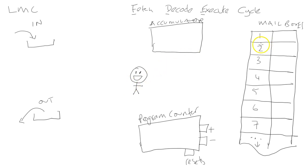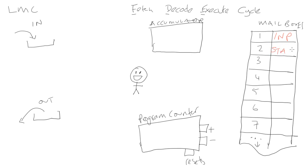So this man walks into the room and his job is to go to the program counter, go to the mailbox that the program counter points to, fetch an instruction or piece of data, and do something with it. Let's write some instructions into some of the mailboxes. I'm going to put in the instructions for a program which is going to add two numbers together. We'll have: input, input, add, then out, then halt.